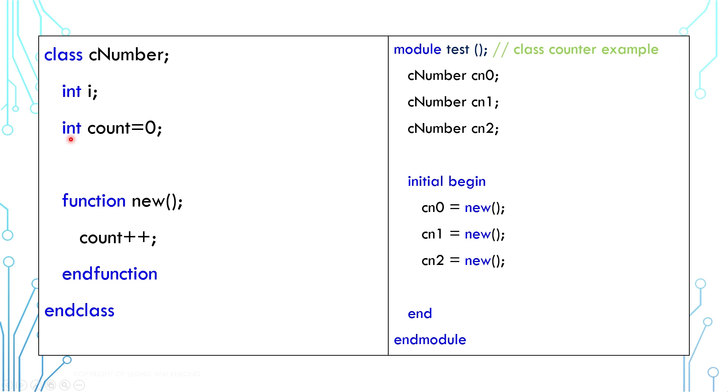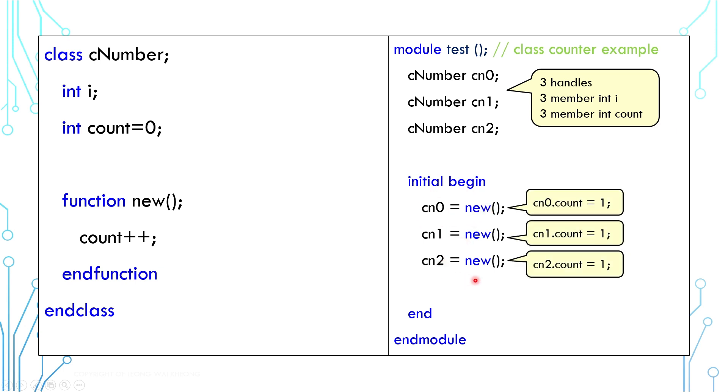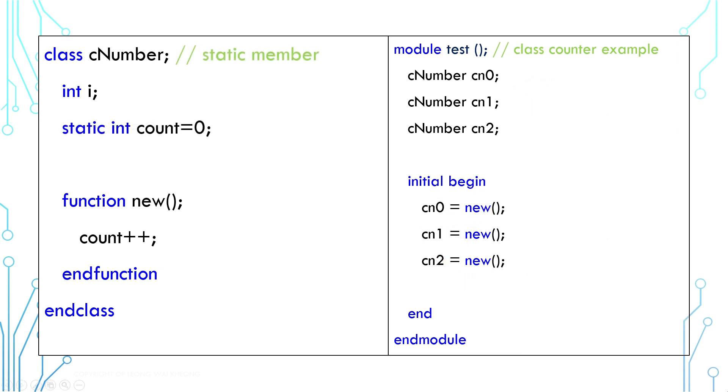This is the same code with the counter inside the class, and there's a new function to increment the counter when it is called. However, this does not work because every instance has its own counter. There are three instances and therefore three separate members count. At the end, every member count is one respectively.